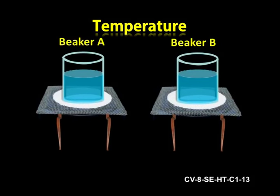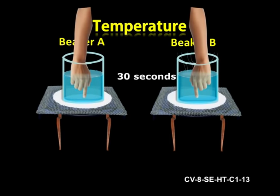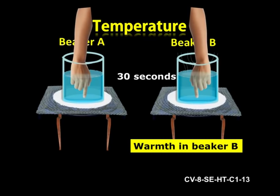Let us take two similar beakers A and B with water in them. Let us supply heat energy to one of the beakers, say B, for 30 seconds. Stop heating and put your right hand in beaker A and left hand in beaker B. Do you feel the difference? Yes. You feel the warmth in beaker B because of heat energy supplied to it.